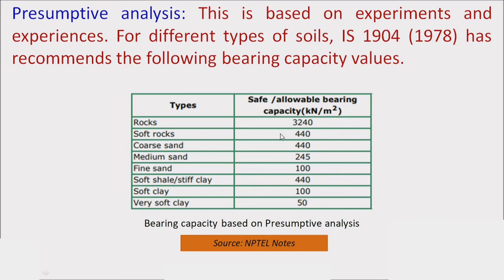As per Indian Standard IS 1904:1978, the presumptive safe bearing capacity values by material type are: rock, soft rock, coarse and medium sand, fine sand, soft shell or stiff clay, soft clay, and very soft clay — with corresponding SBC values ranging up to 50 kilonewtons per meter squared.